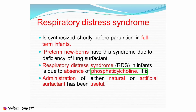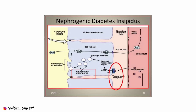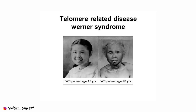Another question on the same basis asked: in respiratory distress syndrome, which lipid is decreased? The answer was phosphatidylcholine. Another question stated there is a defect in the aquaporin receptor and asked which disease this leads to — the answer was nephrogenic diabetes insipidus.